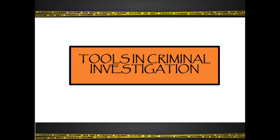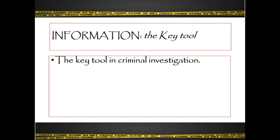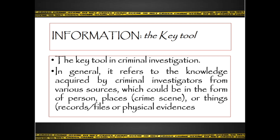The tools in criminal investigation are information, interview, and interrogation. Information is the key tool — without information, we have nothing to base our investigation on. In general, it refers to the knowledge acquired by criminal investigators from various sources, which could be in the form of persons, places, crime scenes, records, files, or physical evidence. Information is the most powerful weapon of investigators — more powerful than a gun or money.